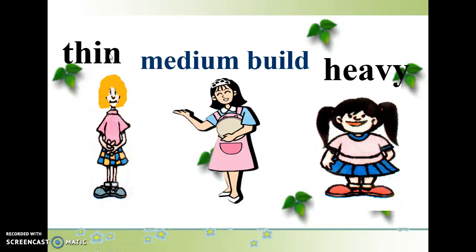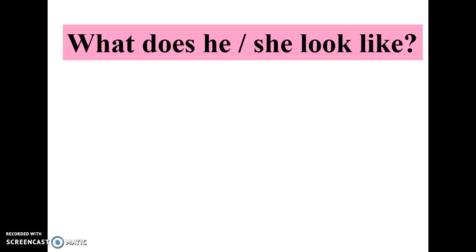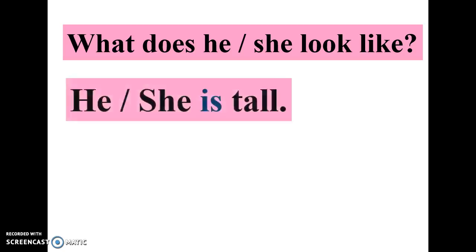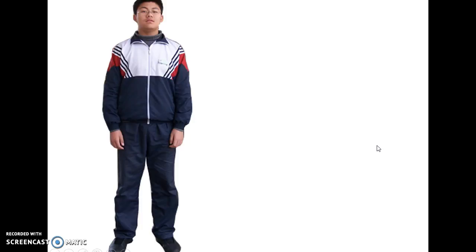The question we are going to use is: what does he or she look like? 'What does he or she look like?' means you have to describe a person's appearance. For example, he or she is tall. He is tall, she is tall. Tall is an adjective that describes height. We can say he is tall or he is short.